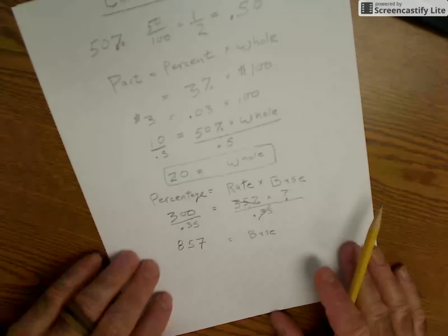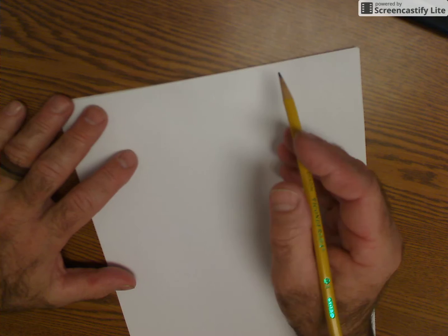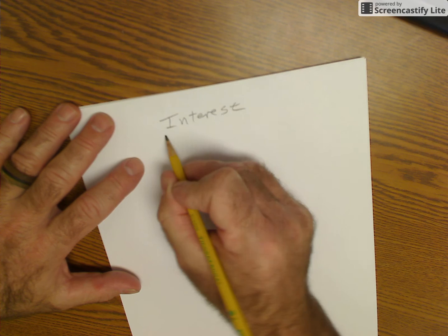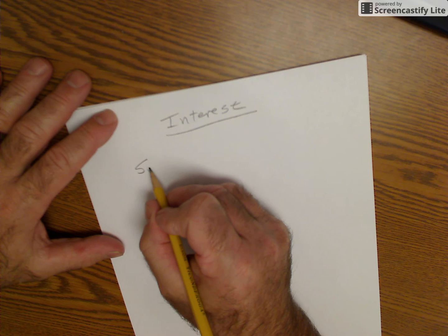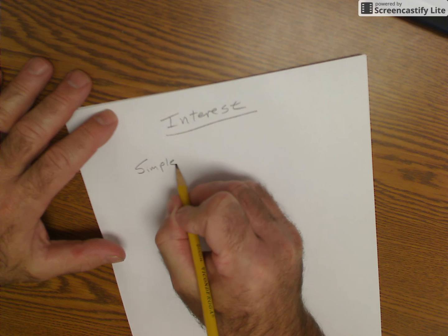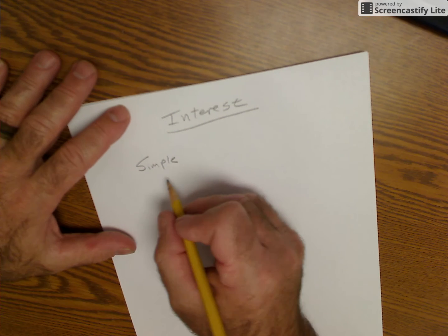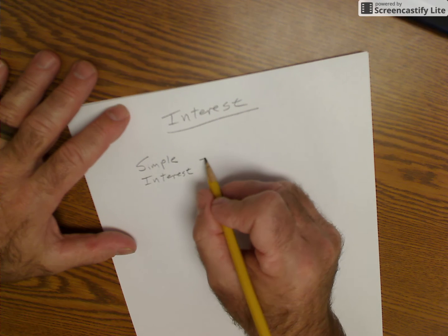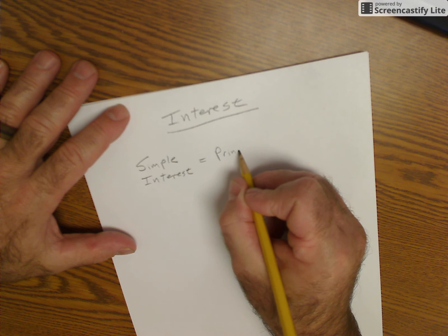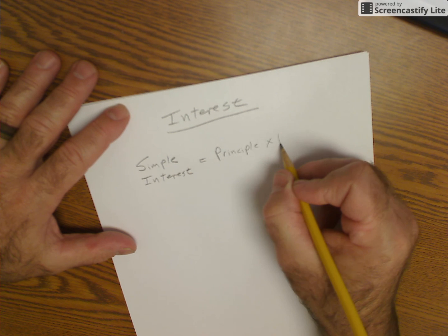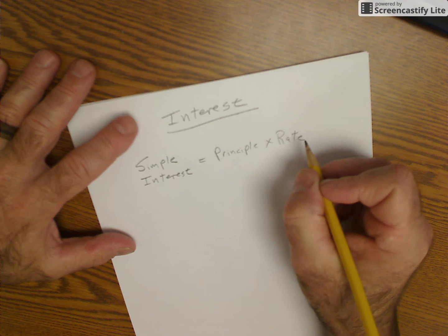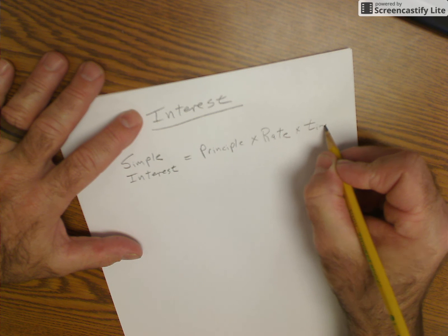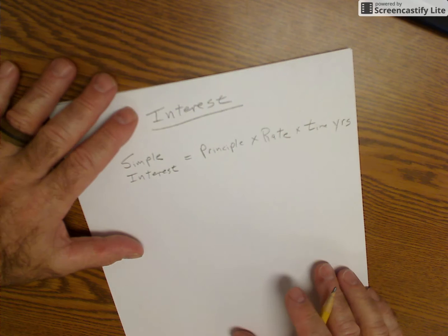Let's just look at one more equation here as percents. I'm just going to take a look at interest. So in interest, we're just going to do simple interest. And simple interest, actual interest that the bank charges you is compounded continuously. But this is going to be simple interest is equal to the principal of the amount of money times the rate that you're paying on that money being borrowed times the time in years.